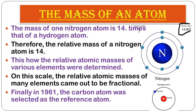Finally, in 1961, the carbon atom was selected as the reference atom. So the progression was: first hydrogen, then nitrogen, but because nitrogen gave fractional relative atomic masses, carbon was ultimately chosen as the standard reference atom.